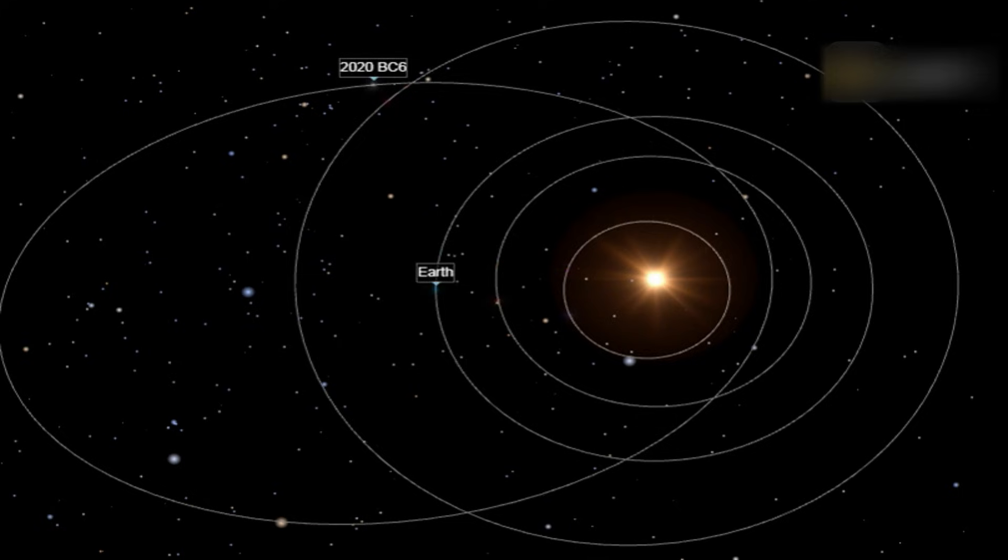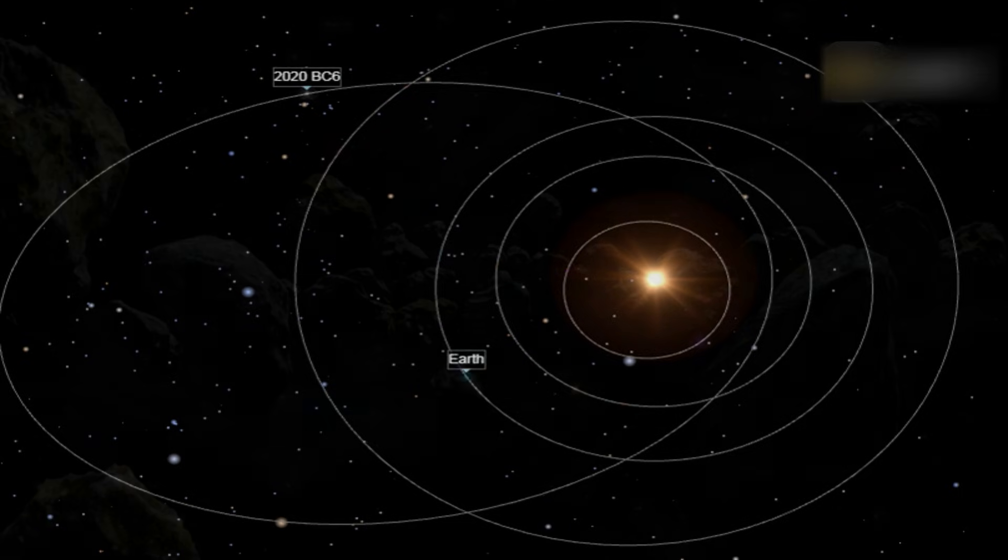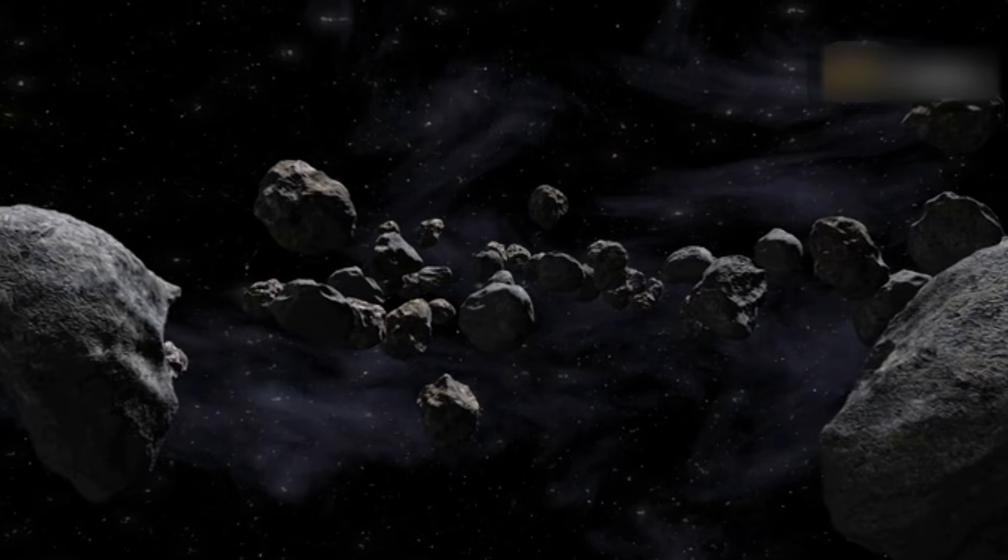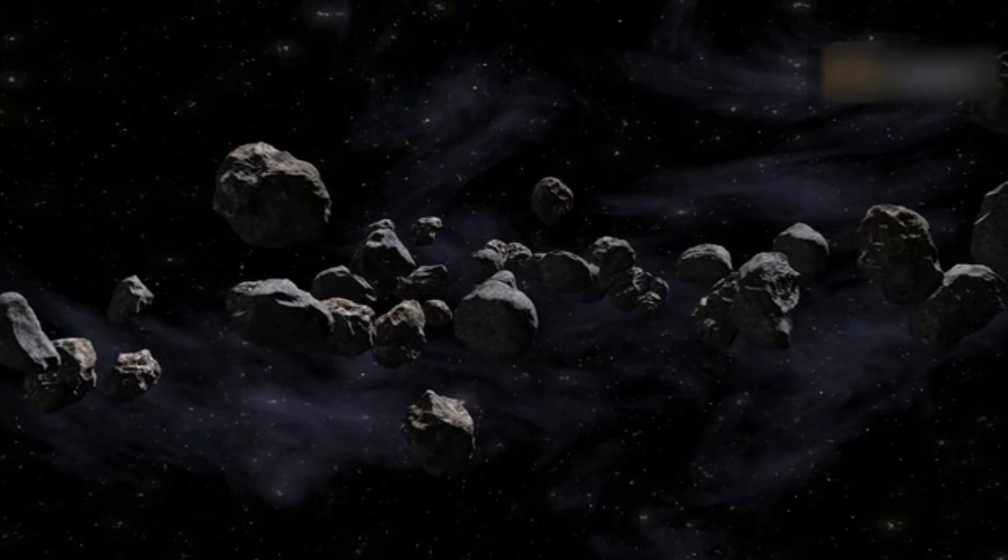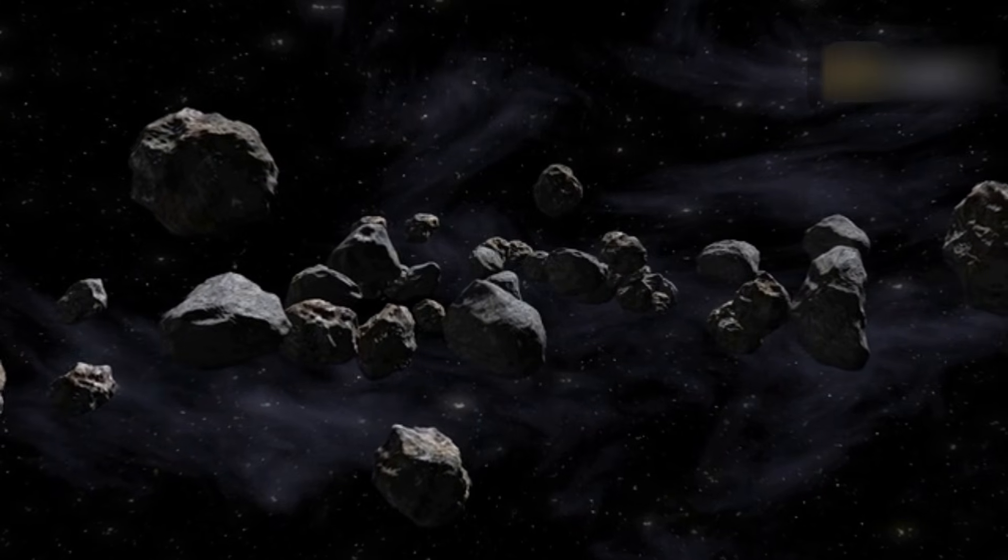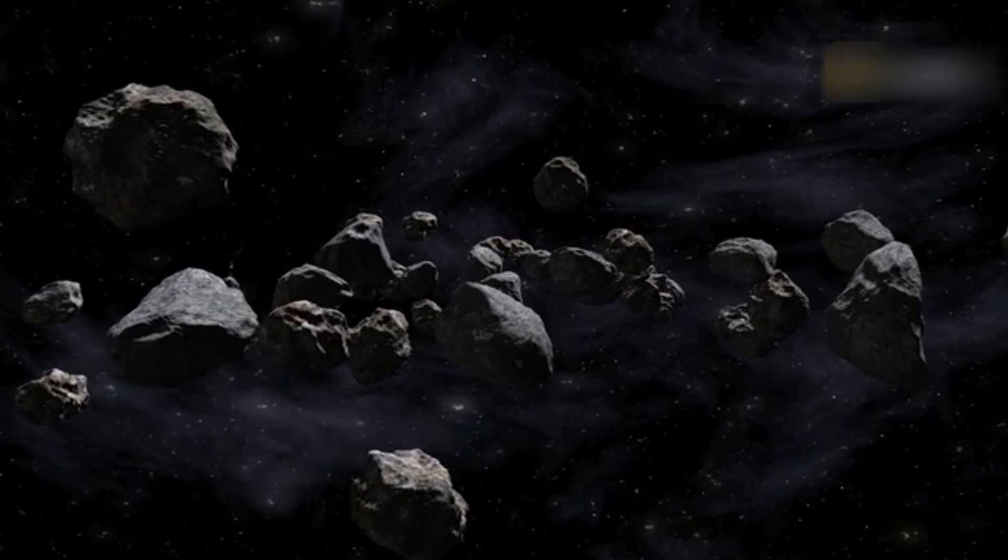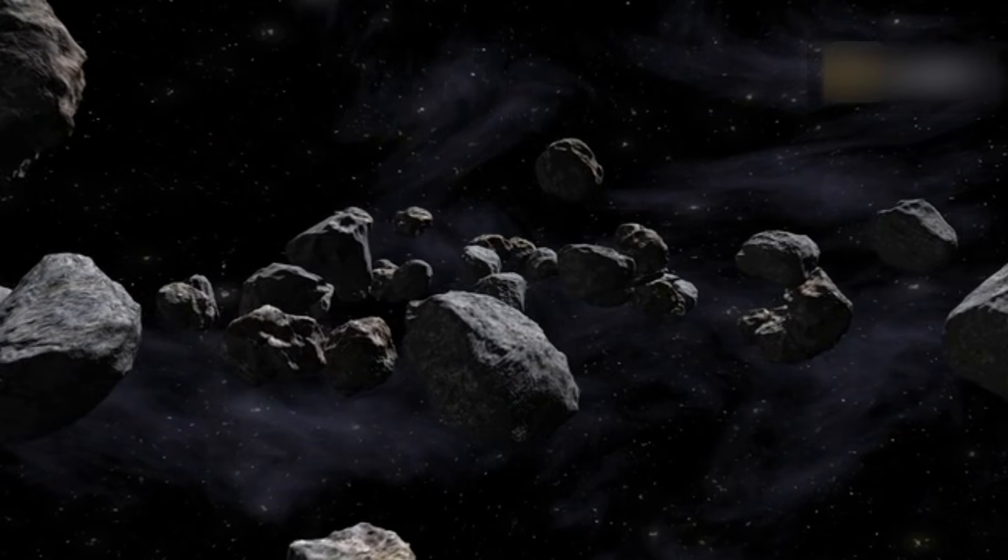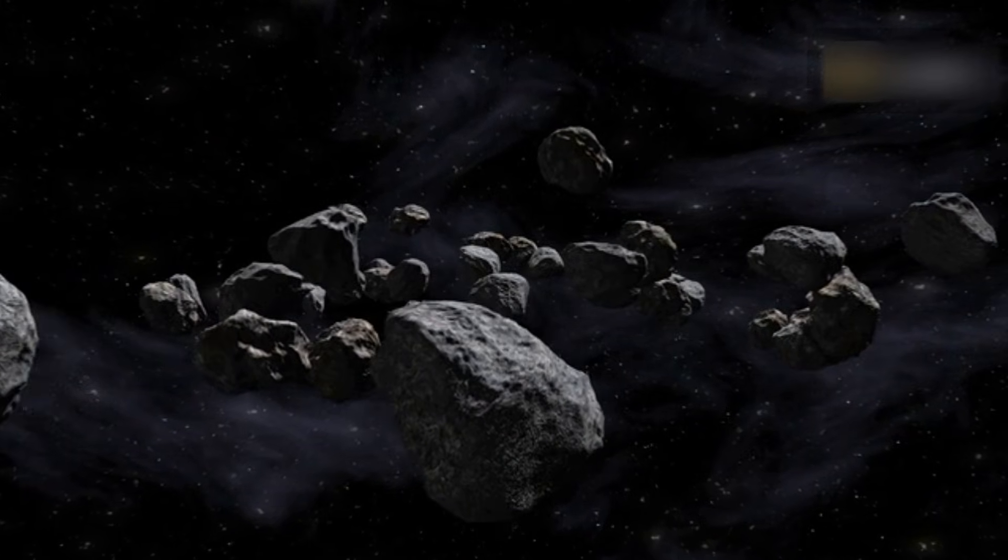To track and assess the risk posed by asteroids like 2020 BC 6, NASA relies on the Center for Near-Earth Object Studies C-NEOS, which collects data from observatories around the world, including contributions from amateur astronomers. Large NASA-funded observatories such as PANSTARS, the Catalina Sky Survey, and NASA's NEO-WISE mission provide the majority of tracking data.